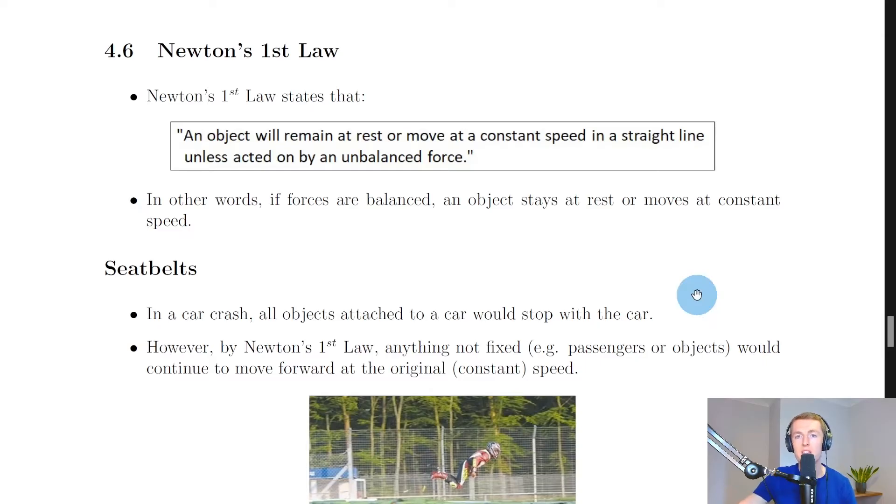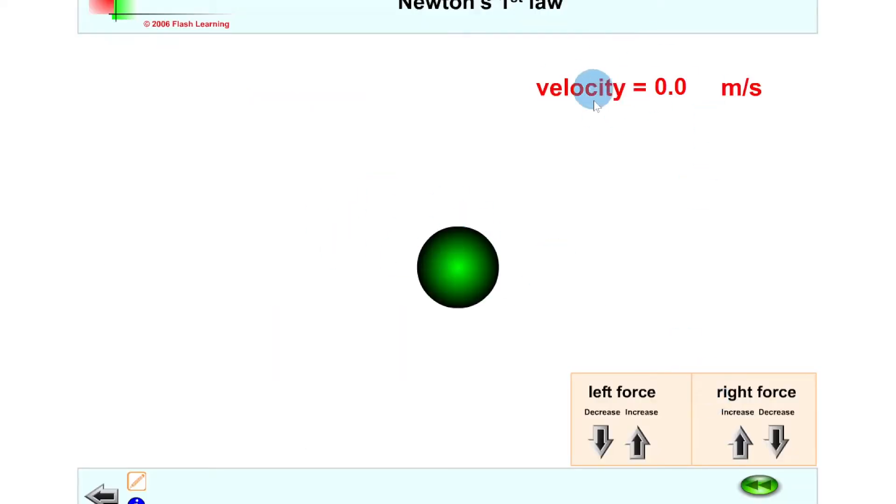So here we have a ball and its velocity shown, and we can apply forces to the right or left hand side of the ball. So let's say we increase the force acting to the right on the ball to one newton. Then this means it's going to be unbalanced forces, so it's going to move to the right.